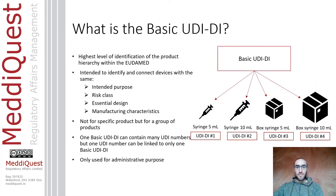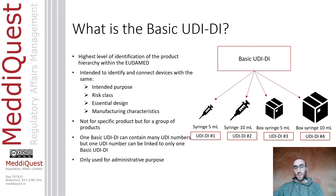The Basic UDI-DI is the highest level of identification of the product hierarchy within EUDAMED. It's intended to identify and connect devices with the same intended purpose, risk class, essential design, and manufacturing characteristics. The Basic UDI-DI is an identification number not for a specific product but for a group of products. Under this Basic UDI-DI you will have one or many UDI-DIs. It has no supply chain value, is invisible to your customers, and is used only for administrative purposes.